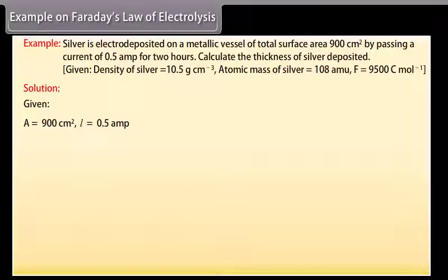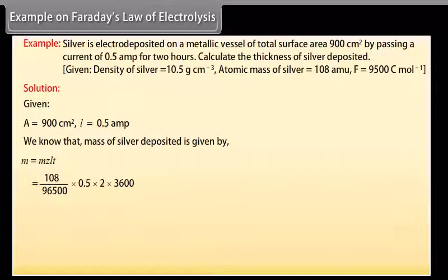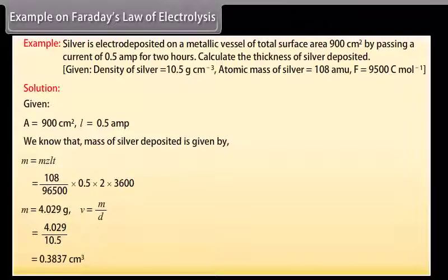Let's see the solution. Here given values are A equals 900 cm square, I equals 0.5 ampere. We know that mass of silver deposited is given by M equals Z I T. By putting the values we get M equals 4.029 gram. We know that V equals M upon D. By putting the values we get V equals 0.3837 cm cube.